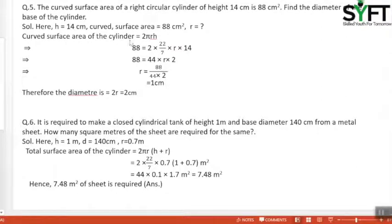Curved surface area of the cylinder equals 2πRH. 88 equals 2 × 22/7 × R × 14. Solving, R equals 88/(44 × 2), which equals 1 cm. Hence, the diameter is 2R, which equals 2 cm.